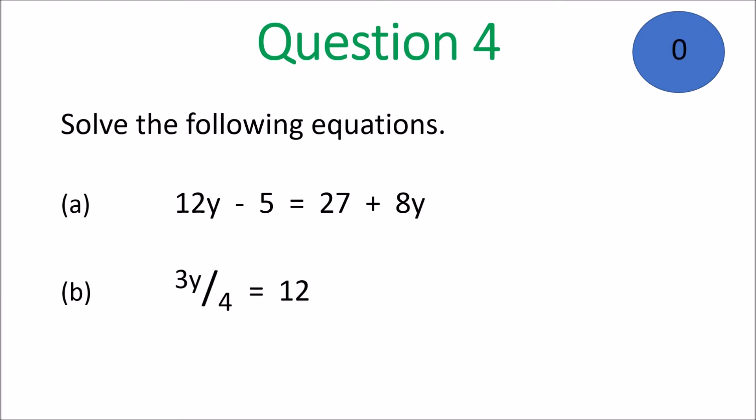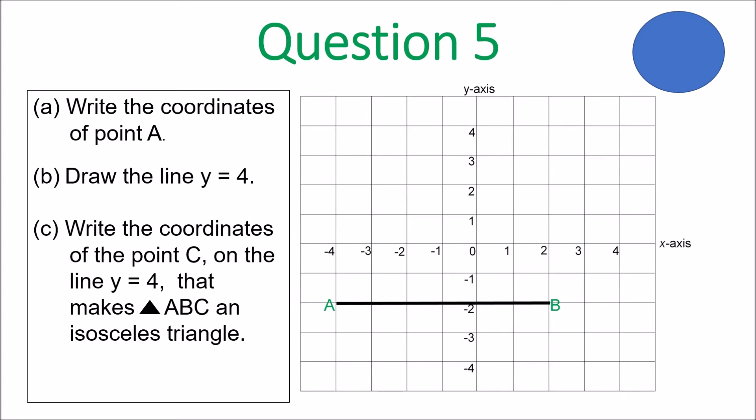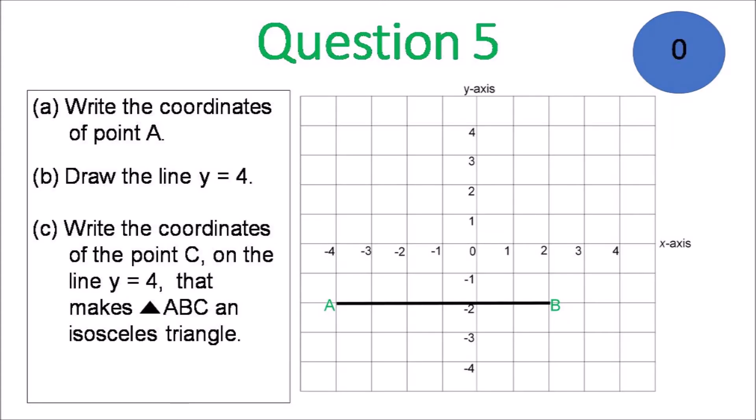Question number 5. Write the coordinates of point A. B, draw the line Y equals 4. And C, write the coordinates of the point C on the line Y equals 4. Then make triangle ABC an isosceles triangle.